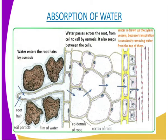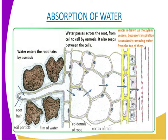As you can see from our diagram, the absorption of water is normally done by the root hair. As you can see from the far left hand, we have the root hair which have gone deep down into the soil particles. In the soil particles is where we are getting the film of water. Water enters the root hair by osmosis, as you can see from our diagram. Water is drawn into the root hair cells by osmosis.